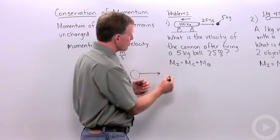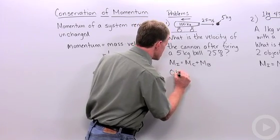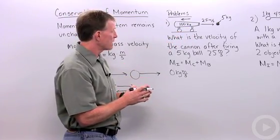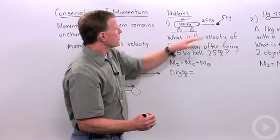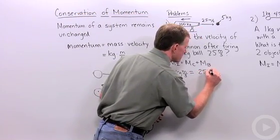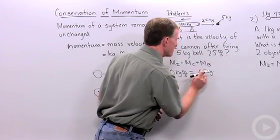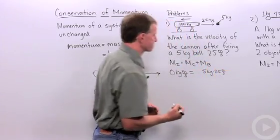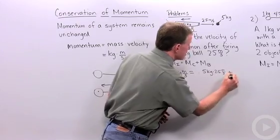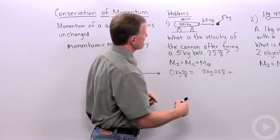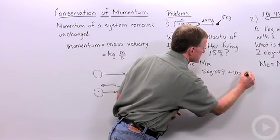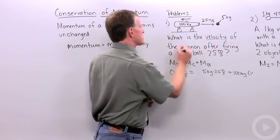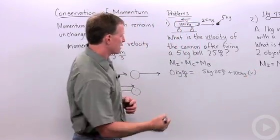So when we start, our initial momentum is going to be essentially zero kilograms per meter squared because we have zero velocity. That's going to equal the momentum of the ball, which is 25 kilograms times—I'm sorry, 5 kilograms times 25 meters per second. I got my units mixed up. And that is also, again, conservation means I also have to add the cannon, which is 100 kilograms times V, because what we're trying to solve for is what is the velocity of the cannon. So V is our unknown here.